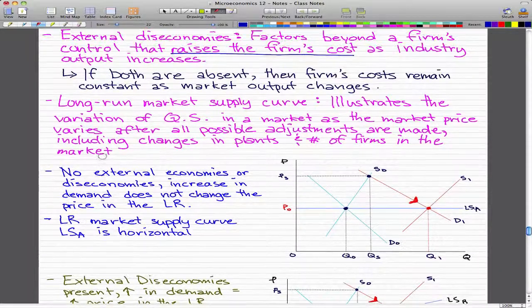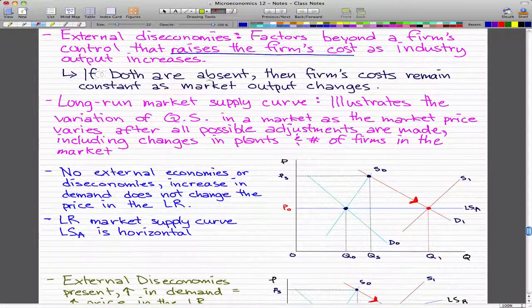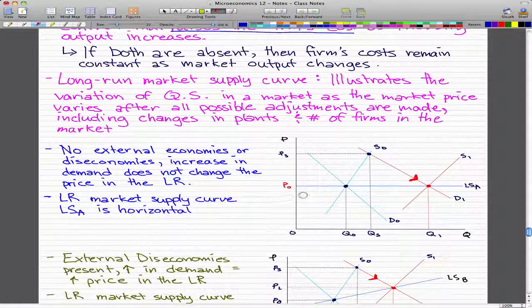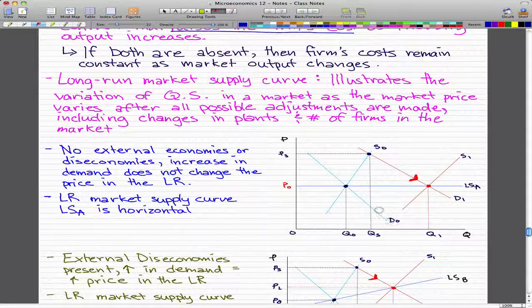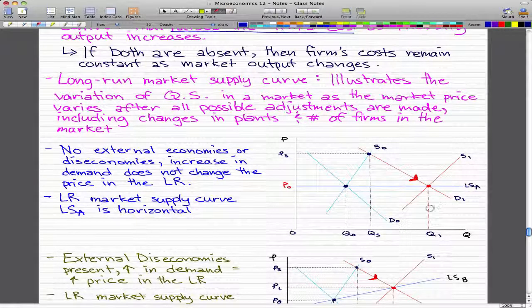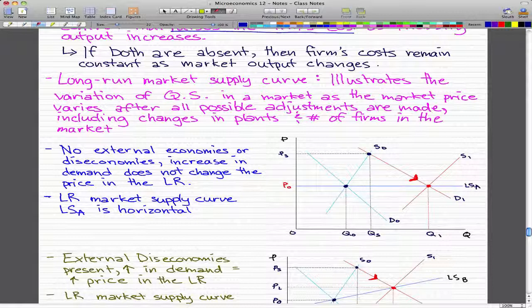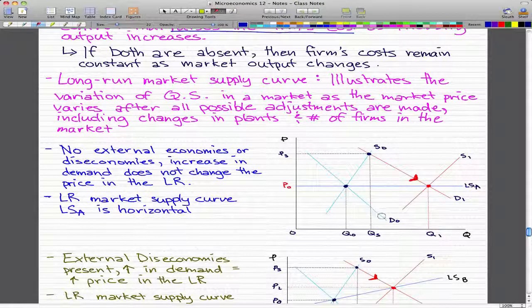This first graph shows the case when no external economies or diseconomies exist. An increase in demand does not change the price in the long run. Having D0, this light blue curve, as our original demand, if the demand increases and shifts rightward to D1, this red line, what happens is that the increase in demand doesn't really change the price.